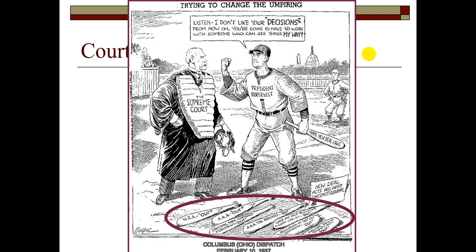Those are important because the AAA and the NRA are two of the major parts of the New Deal. You'll also see tax refunds, regulation of shipments, the original Railway Pension Act, wage, hour, and regulations within the Guffey-Cole Act — all things that were a big part of what FDR wanted to do in the New Deal.